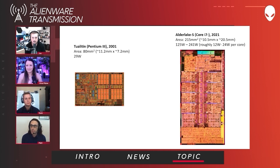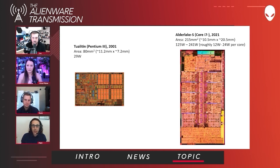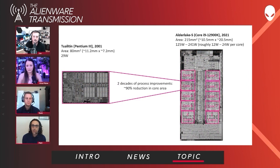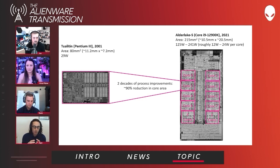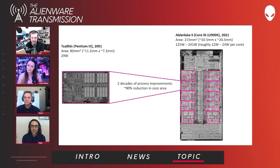On the right I'm showing Alder Lake S, launched last year. These two pictures are to scale — there's quite a bit more die size here, and I'm showing a power range of 125 to 240 watts. That's how we're now speccing our parts, embracing the dynamic frequency range and what that means for power dissipation. On the next slide, you can see we went from that single core to eight cores, and the total core area shrank 90 percent over those two decades from process node improvements.